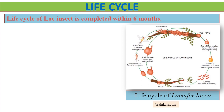The life cycle of lac insects is completed within 6 months. As the male insect undergoes complete metamorphosis, it transforms into another form — it loses its proboscis and develops antennae, legs and a single pair of wings. Its life cycle consists of 4 stages: egg, larvae, pupa and adult. On the other hand, the female, after undergoing incomplete metamorphosis, retains its mouth parts but fails to develop any wings, eyes and appendages, and its life cycle consists of 3 stages: egg, nymph and adult.